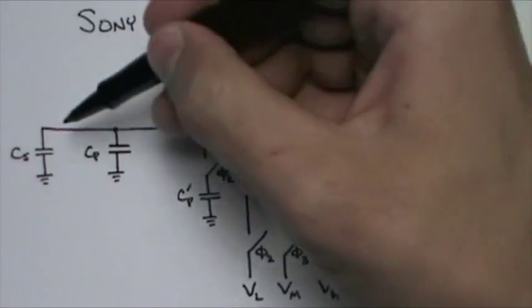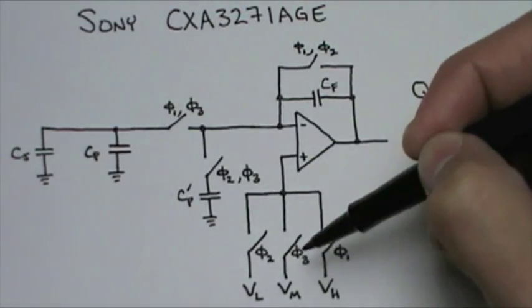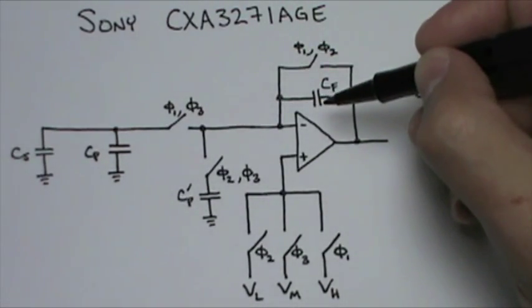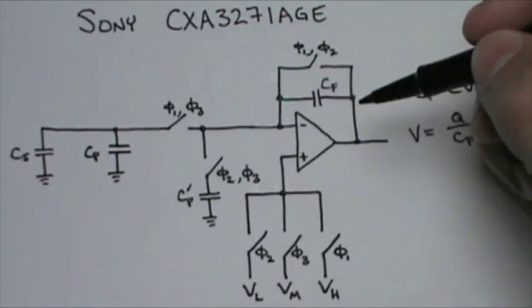In phase 3, the sensed voltage is driven to Vm, the difference being that a feedback capacitor is used instead of a switch for the op amp. So, the charge stored on the sensed capacitor is equal to the sensed capacitance times the delta V between VH and Vm.